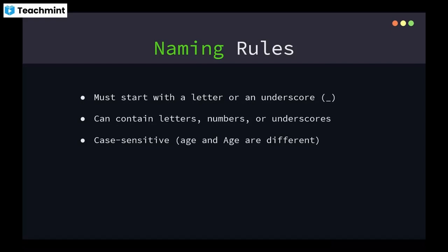There are some naming rules for variables. First, a variable name must start with a letter or an underscore — you cannot start with numbers or special symbols. The name can contain letters, numbers, and underscores, but no other special symbols. Variable names are also case sensitive, so 'age' and 'Age' are two different variables.